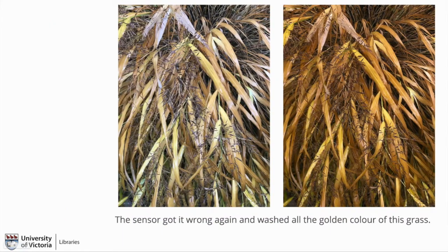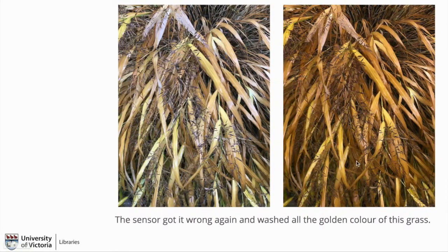This is a great example of a case where the brag of 'no filter' would be no brag at all. The sensor took a look at this grass, which was a beautiful golden color, and thought there's no way the grass could be that golden, so it sucked all the color out when I took the picture. What I needed to do was adjust the white balance within the camera. The second image isn't post-processed at all — this is no filter — this is just me fixing the white balance within an app while taking the photo, and this is what the grass actually looked like.